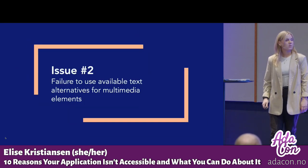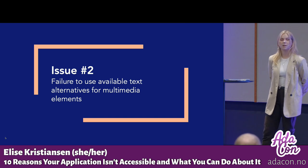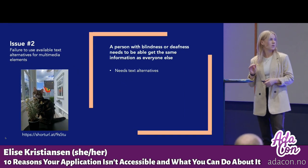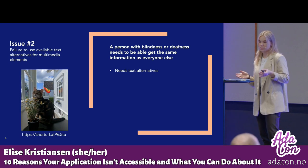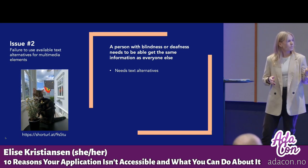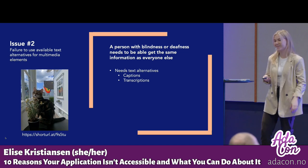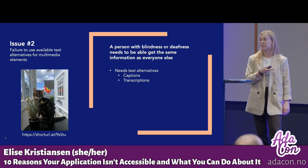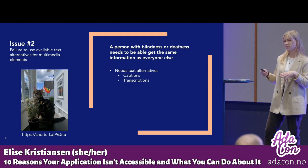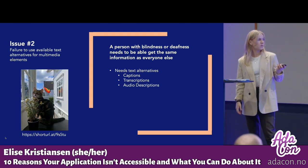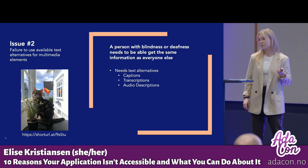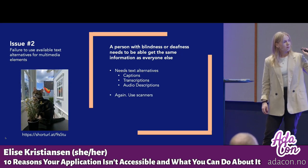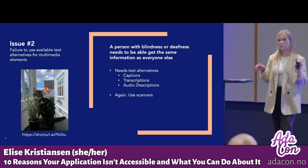Issue number two: failure to use available text alternatives for multimedia elements such as videos and audio files. There are various kinds of text alternatives to consider. Captions: videos with sound must have captions so people with hearing impairments can follow along. Transcriptions: audio files and videos must have a text transcription. Audio descriptions: videos with important visual elements must include audio descriptions for visually impaired users. You can use a scanner to help catch many of the missing text alternatives.